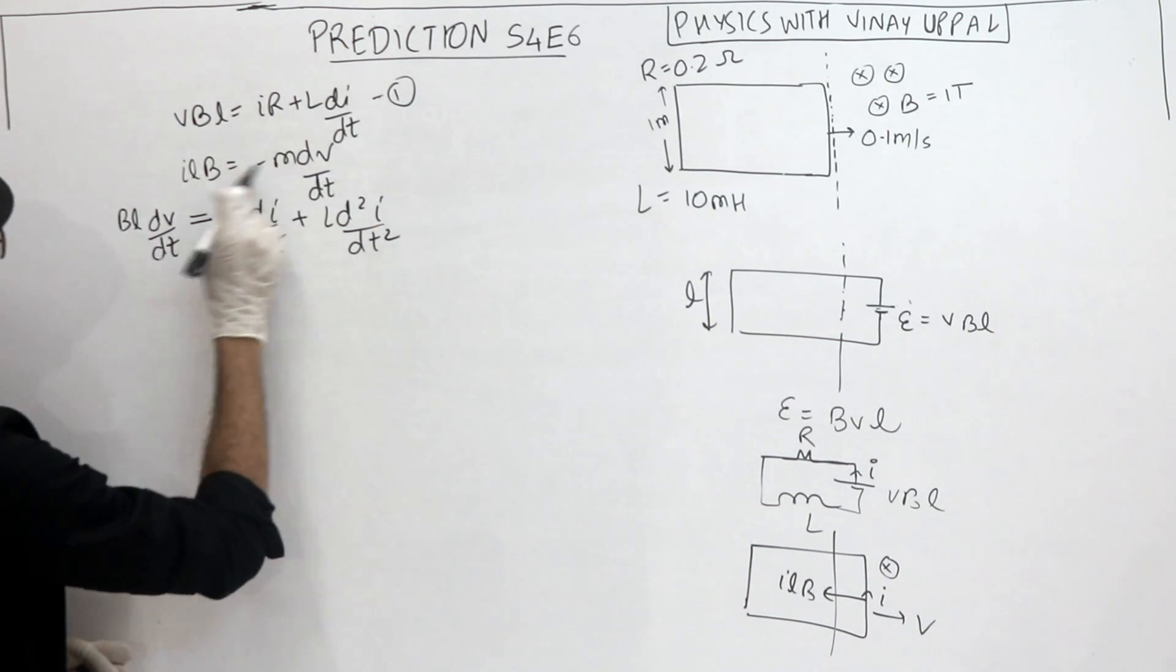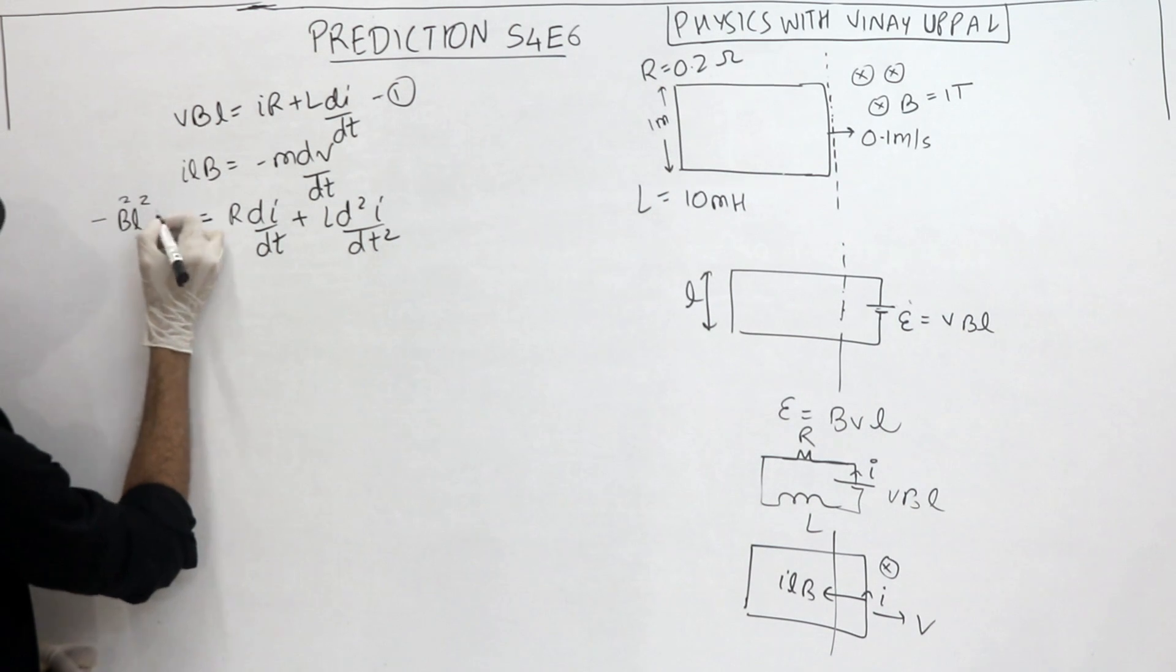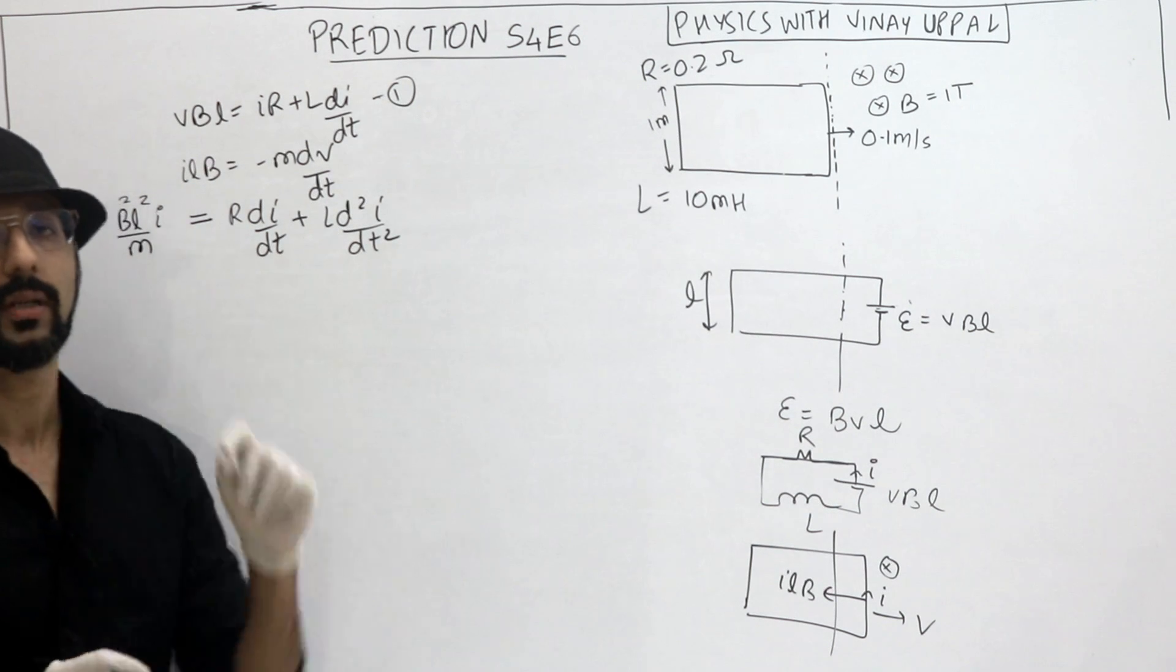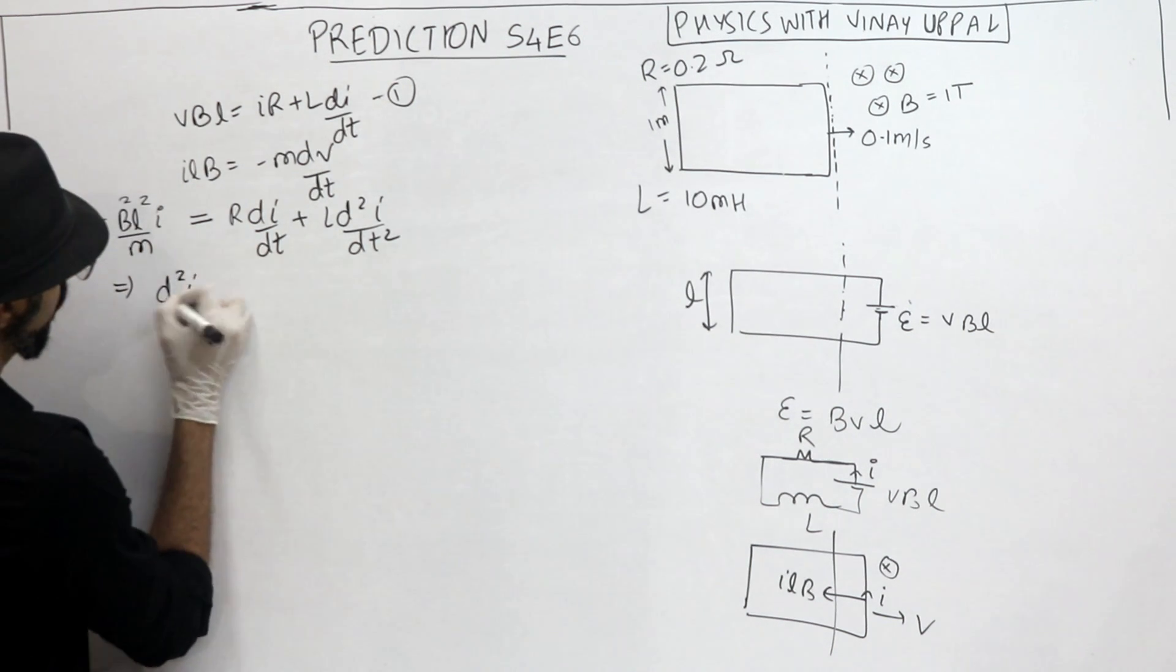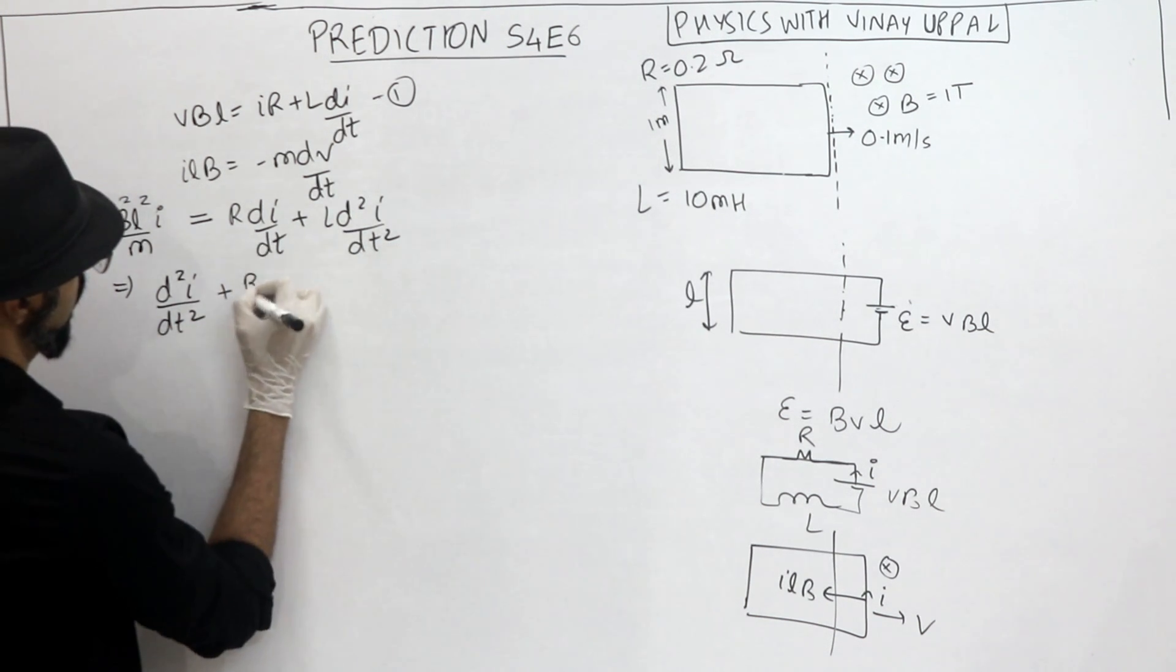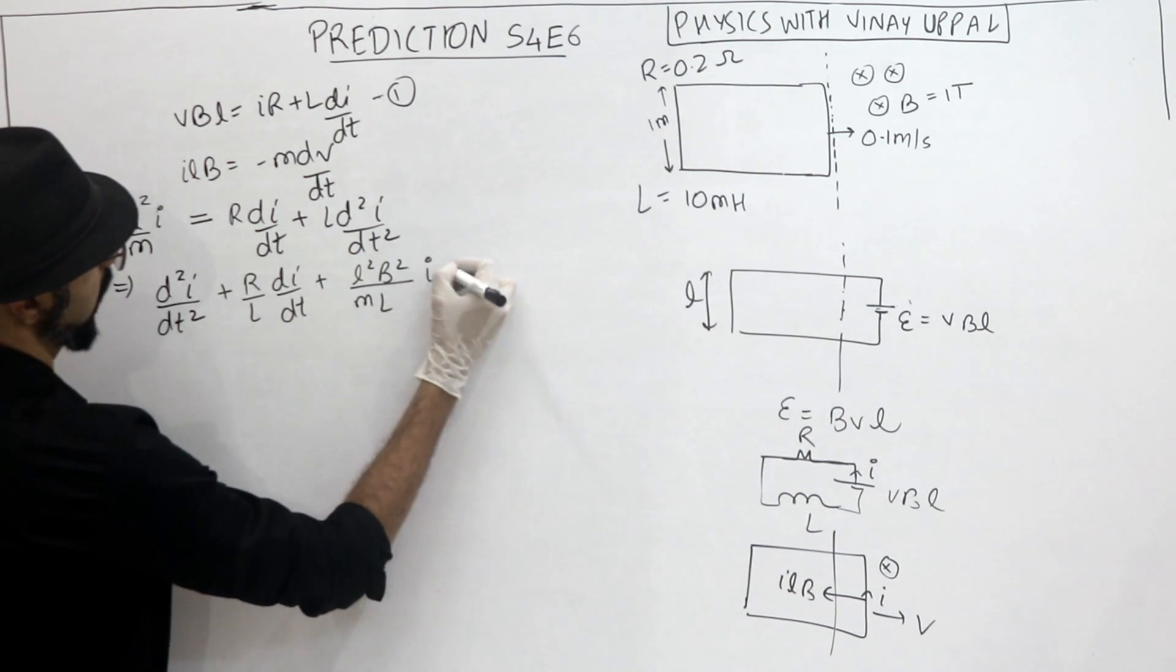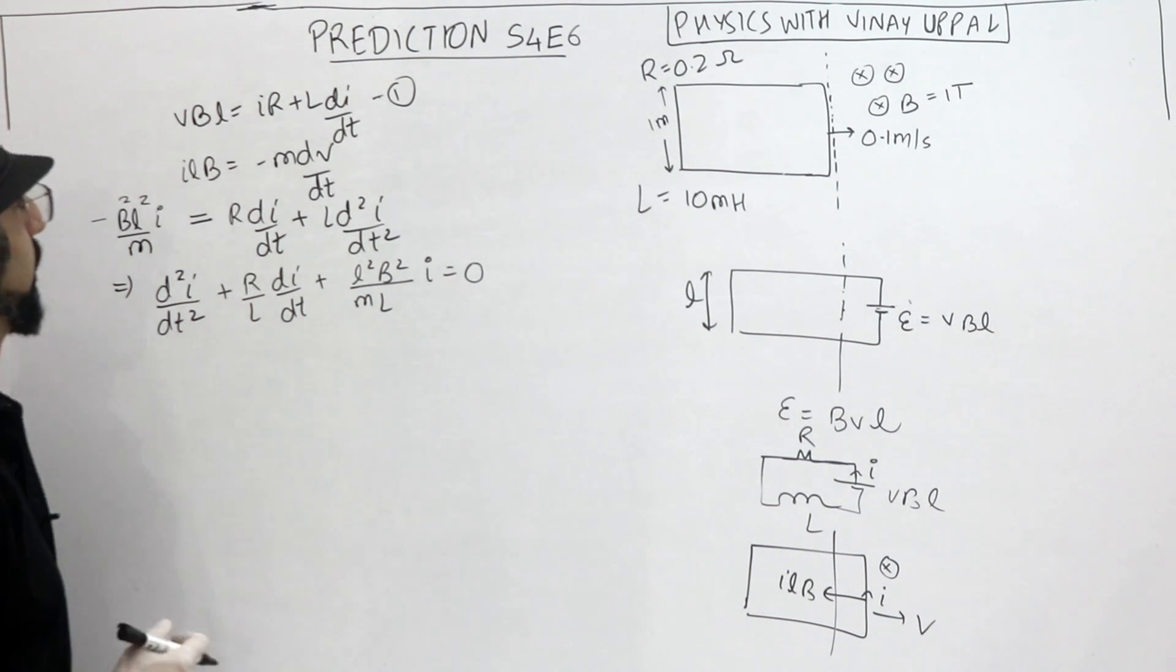Alright. And dV/dt is -ILB/M with a negative sign. So here. Right. So I have eliminated velocity and just formed a differential equation in current. So what differential equation is coming? d²i/dt² plus R/L di/dt plus L²B²/ML i should be zero.